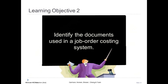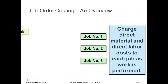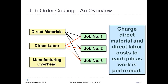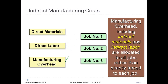Let's identify the documents used in a job order costing system. In a job order costing system, direct materials and direct labor are traced directly to each job as the work is performed. Manufacturing overhead, which includes indirect materials and indirect labor, represents other manufacturing costs such as the power used to run machinery in the factory. Manufacturing overhead cannot be traced directly to specific jobs.